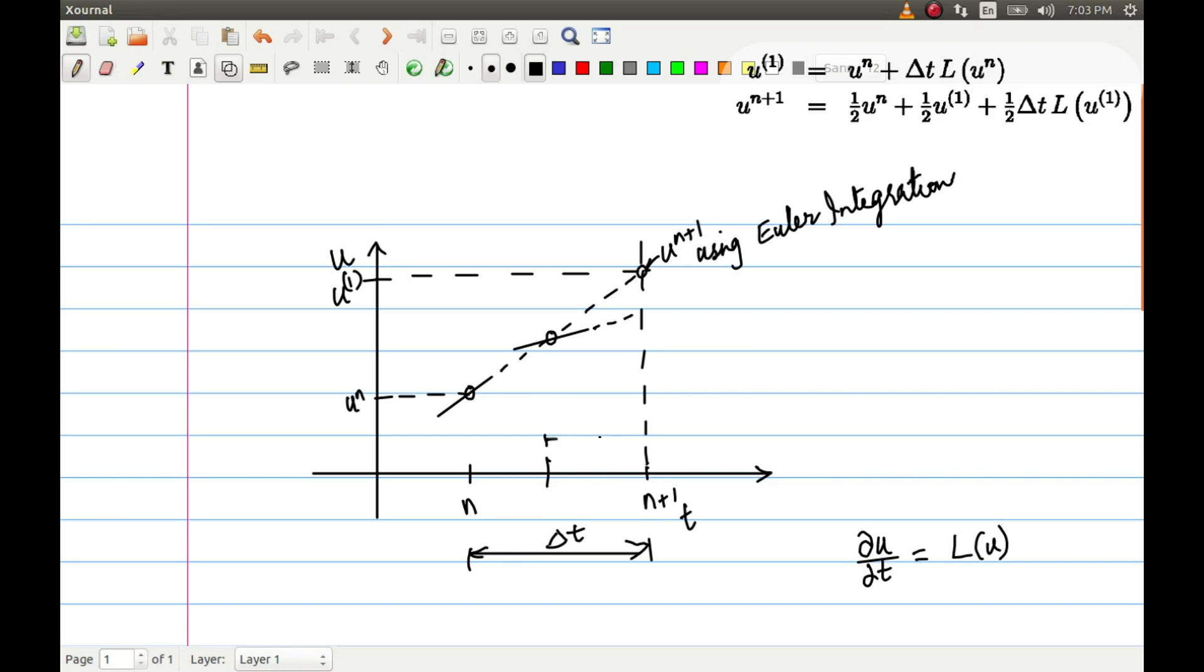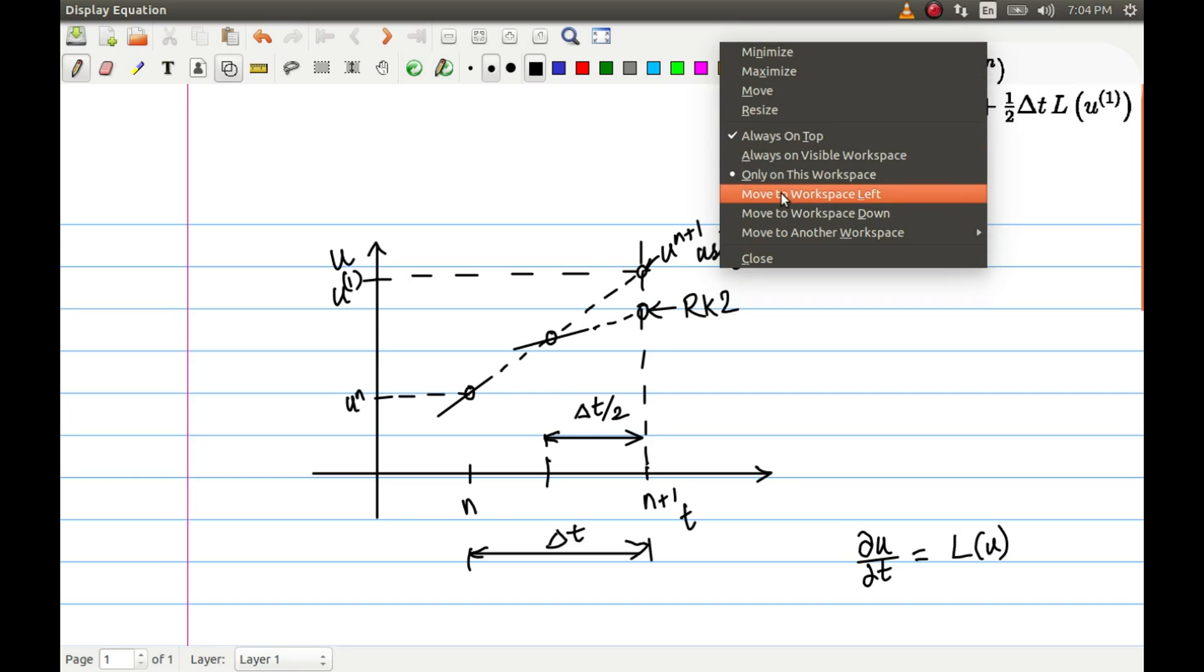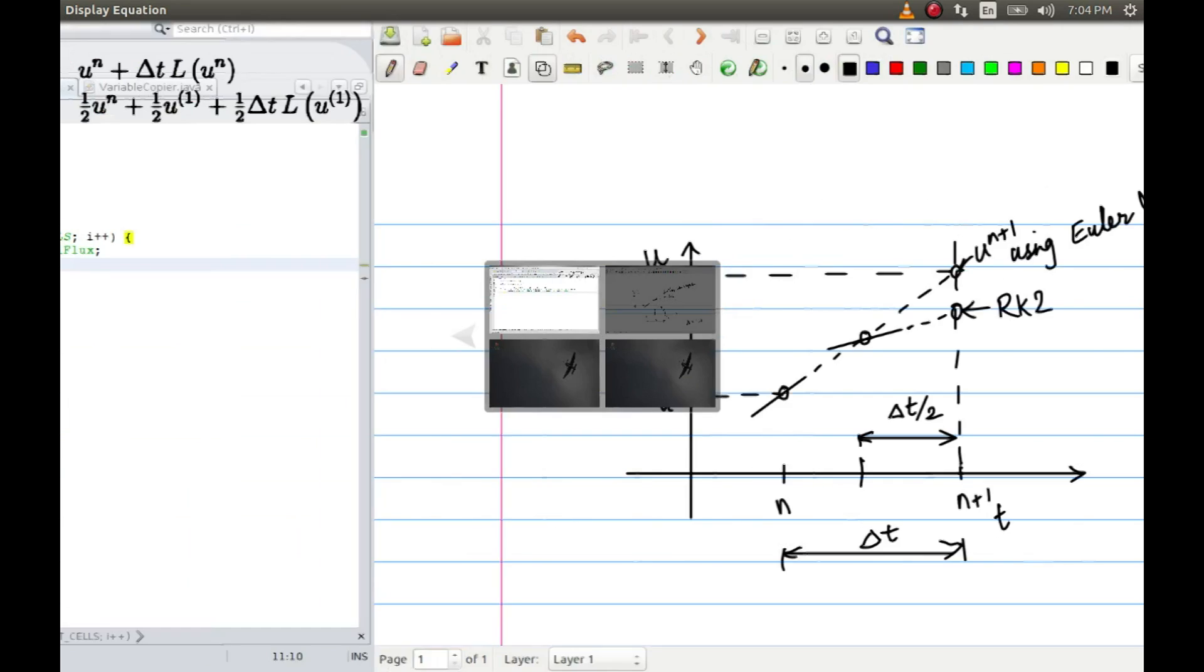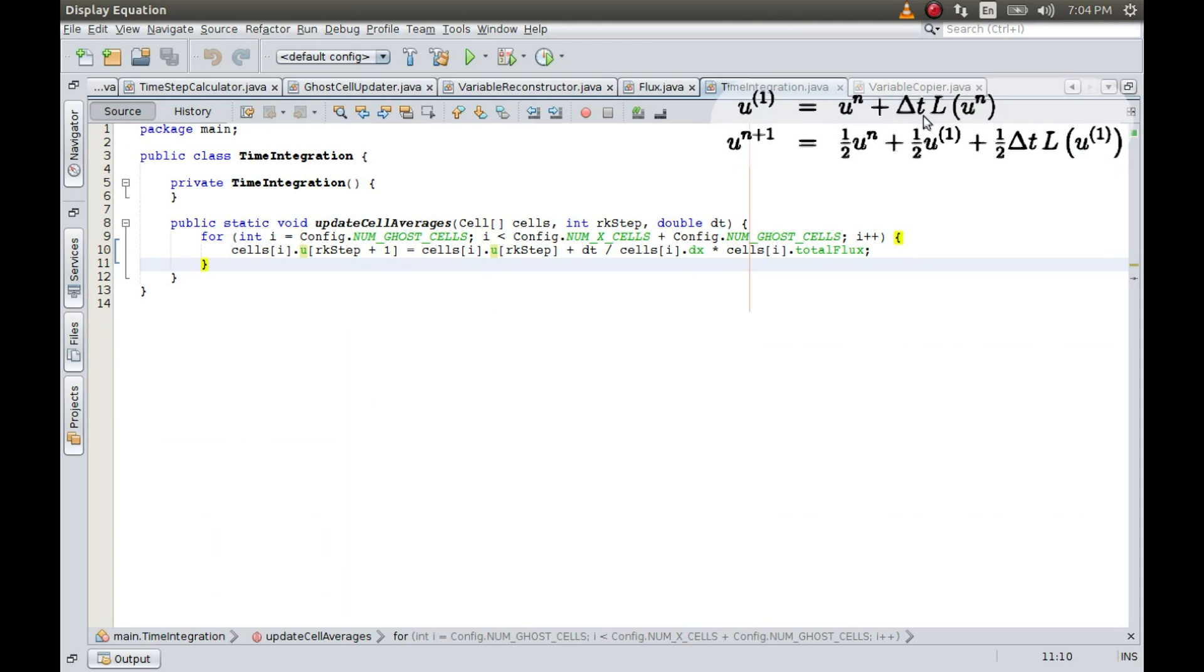This distance is Δt, and therefore this distance from here to here is Δt/2. So we get a better approximation using RK2. This is the whole idea - we are trying to do much better by using more number of steps. Let's now implement this method in our code.